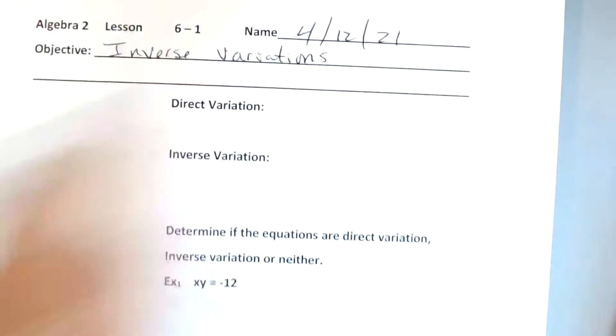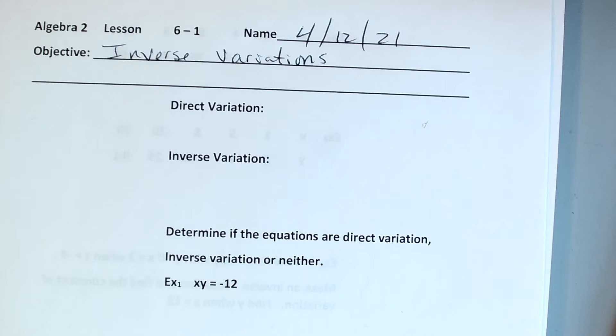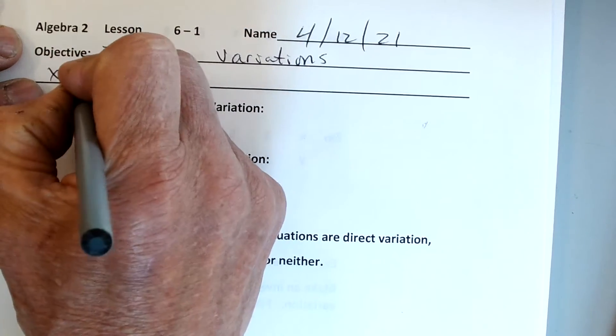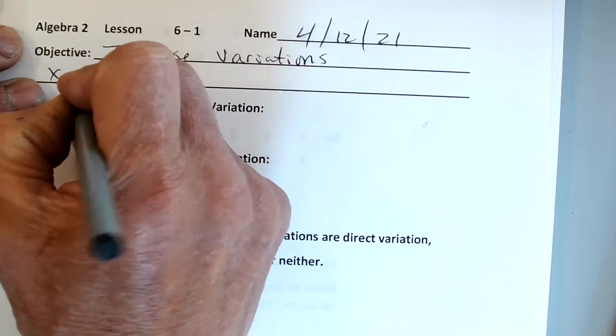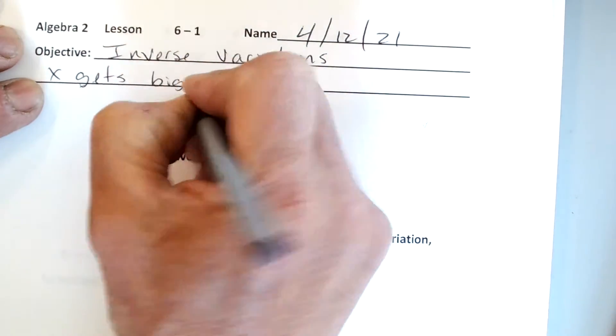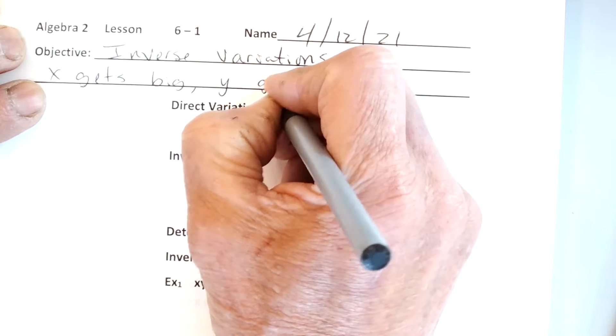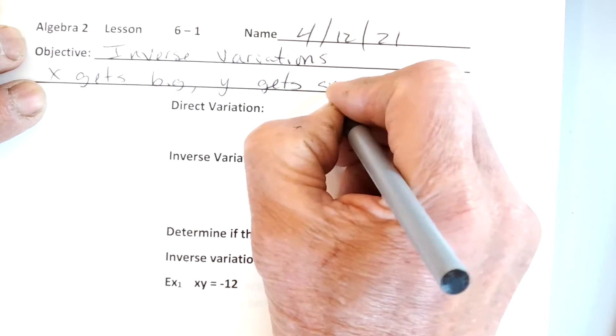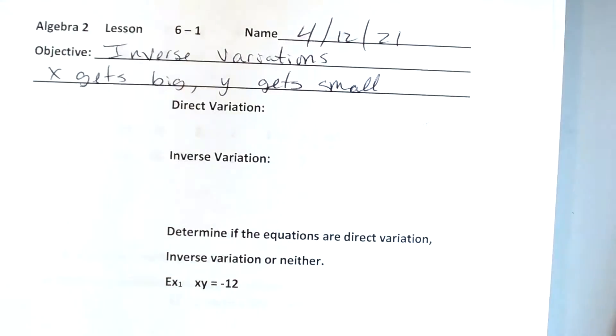Inverse variations: as x gets big, y gets small. So x gets big, y gets small, and vice versa.